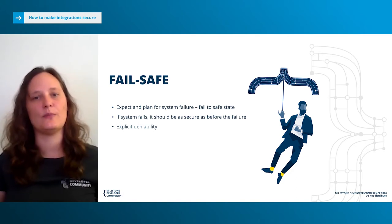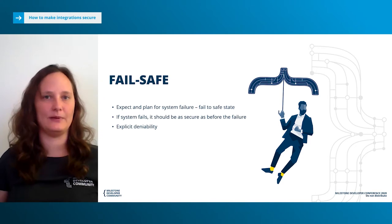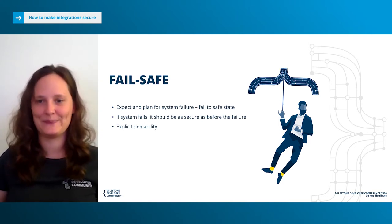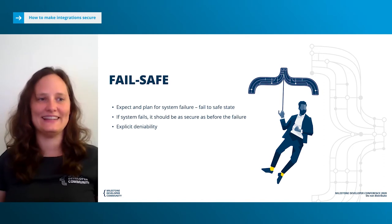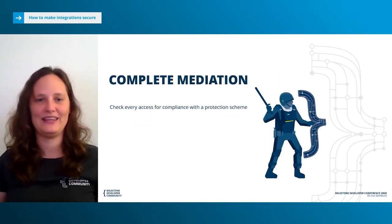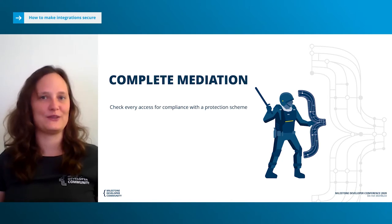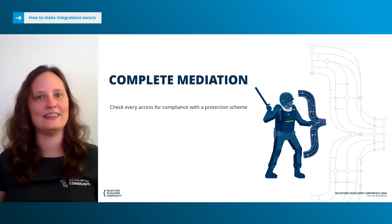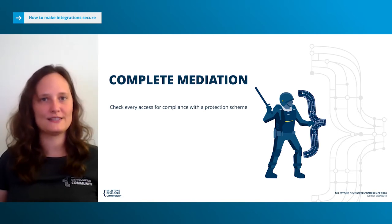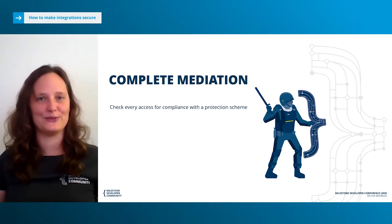That leads us to Explicit Deniability — meaning that if something is not specially authorized, everything should be denied by default, because doing the opposite is risky. You might not think about all the reasons why you should deny access. The next principle is called Complete Mediation. Every time when possible, we should check for access. Imagine you're entering Milestone Systems with an access card. You swipe the card, go to the main lobby, and then at the next doors you should again swipe your card, because just because you're a guest at Milestone doesn't mean you should be allowed into the service room.